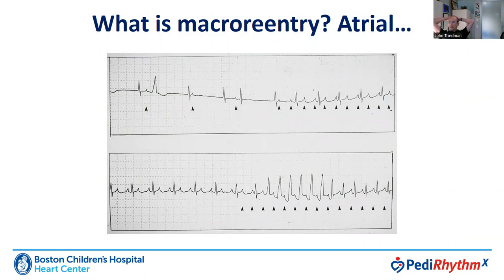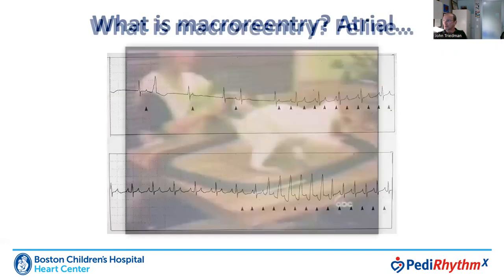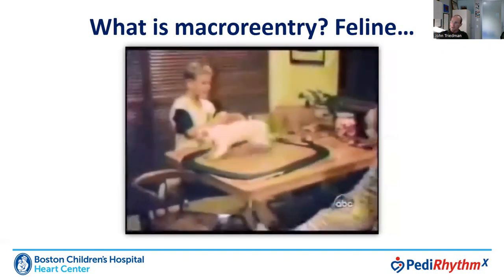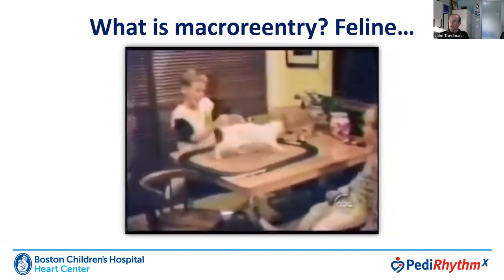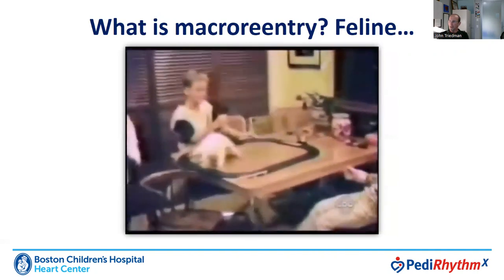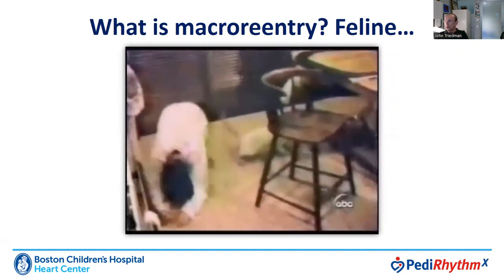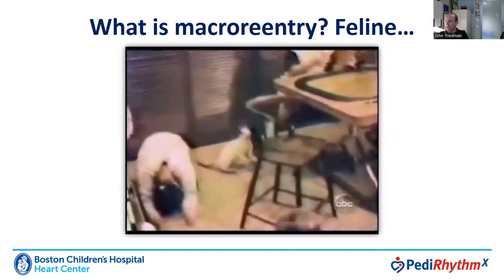Here we see a Holter tracing which shows sinus node dysfunction, spontaneous initiation of atrial tachycardia, an IART or intra-atrial reentrant tachycardia with two-to-one conduction, then one-to-one conduction both with and without left bundle branch aberration. We also have an example of feline macro reentry, which is extremely similar to atrial macro reentry — the organized pursuit around a fixed circuit of an excitable animal — and that is the target that we have for these types of procedures.